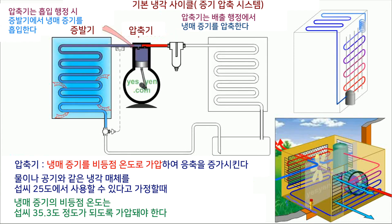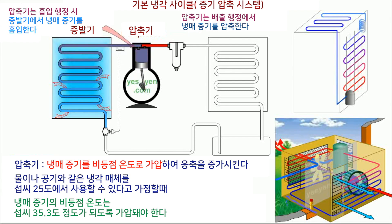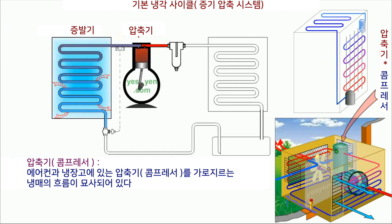Compressor: The compressor pressurizes and hence increases the condensing — that is, the boiling point temperature — of the refrigerant vapor. Assuming a cooling medium like water or air available at 77°F (25°C), the vapor has to be pressurized such that the corresponding condensing temperature is around 95°F (35°C). The flow path across the compressor in the air conditioner and refrigerator is depicted.